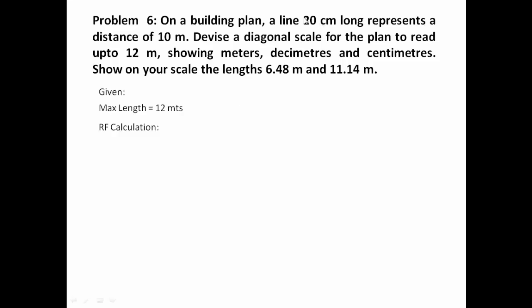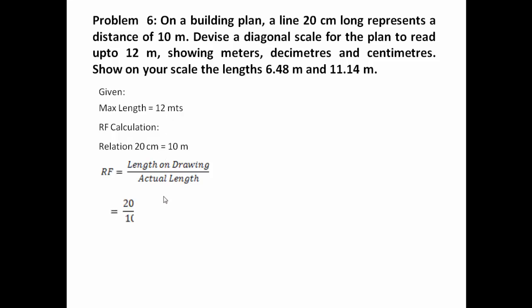Anything on the drawing which is 20 centimeters long represents a distance of 10 meters in reality. The actual length is 10 meters whereas the drawing length is 20 centimeters. So the formula for RF is: length on drawing over actual length — that is 20 centimeters over 10 meters. Since the numerator is in centimeters and denominator is in meters, we convert: 1 meter equals 100 centimeters, giving us 20 over 1000.